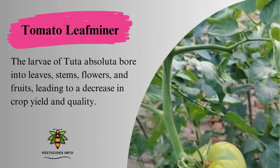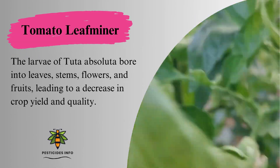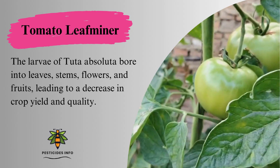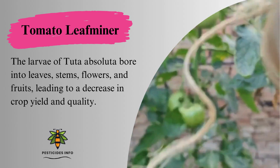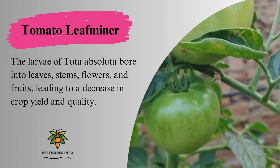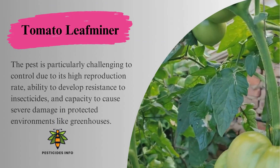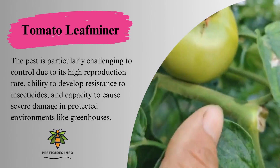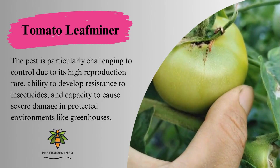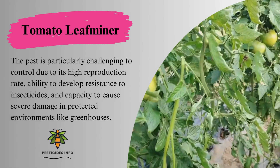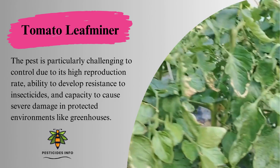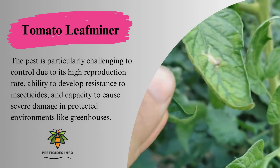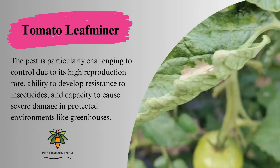The larvae of Tuta absoluta bore into leaves, stems, flowers, and fruits, leading to a decrease in crop yield and quality. The pest is particularly challenging to control due to its high reproduction rate, ability to develop resistance to insecticides, and capacity to cause severe damage in protected environments like greenhouses.